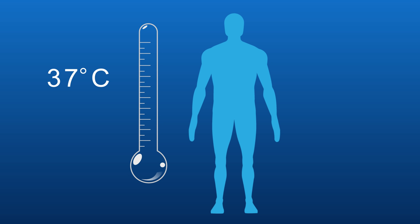So what kind of things need to be kept constant in the body? Well, it's very important to keep our temperature the same at around 37 degrees Celsius. You can find out more about this in the video on temperature regulation.